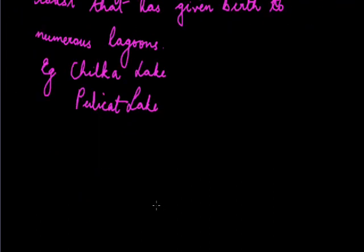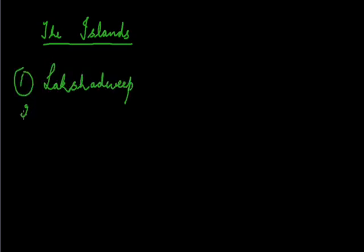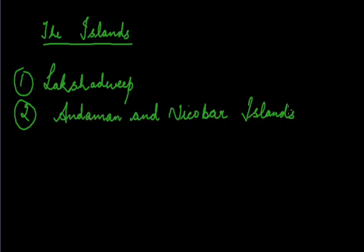Now we come to the last feature — the Islands. Besides the mainland, Indian territory also extends into the Arabian Sea and the Bay of Bengal in the form of Lakshadweep and the Andaman and Nicobar Islands respectively. The Lakshadweep Islands are small coral islands and none of them is more than a couple of square kilometers in area. The Andaman and Nicobar Islands are also a cluster of islands stretched almost in a line.